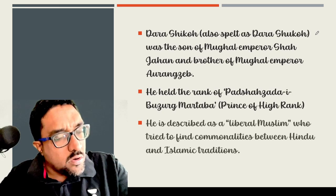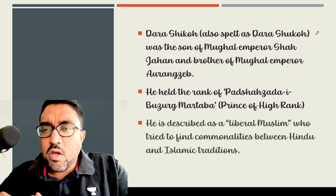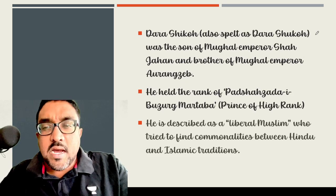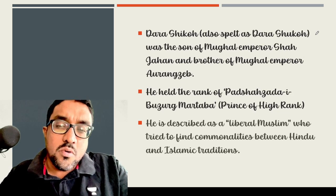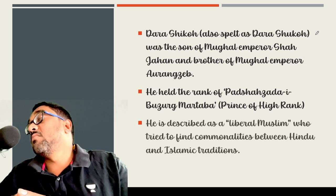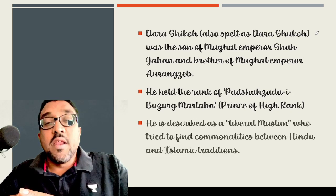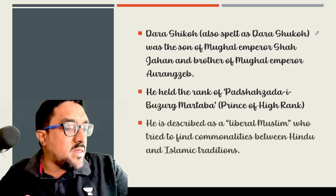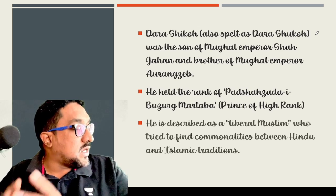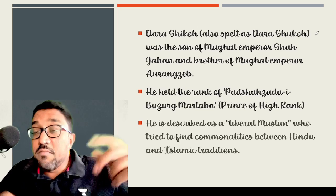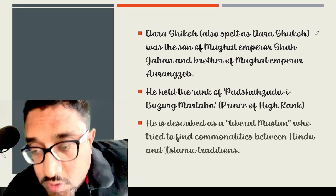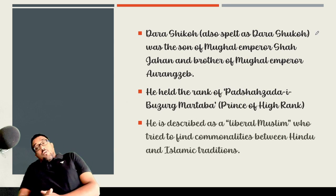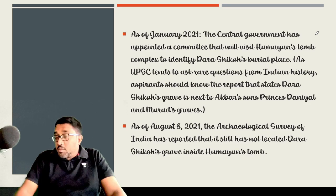Dara Shikoh, just to give a quick background of who he is: he is the son of Mughal Emperor Shah Jahan and brother of Mughal Emperor Aurangzeb. His rank was Shahzada Buzgur Marsaba — basically Prince of the Highest Rank. One common belief at that time was that Dara Shikoh was going to be the next successor of Shah Jahan, which obviously Aurangzeb did not let happen. Dara Shikoh has also been described as a liberal Muslim who tried to find commonalities between Hindu and Islamic religions. He was very popular among the people of Delhi.